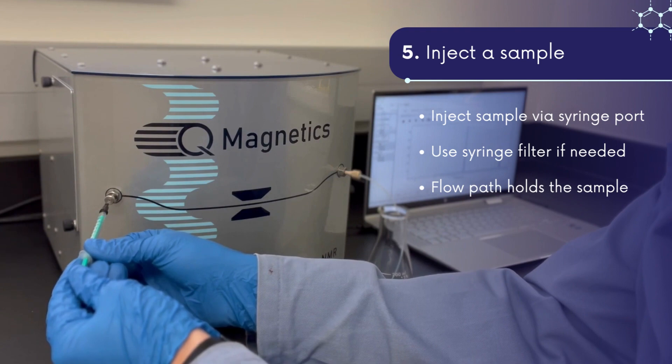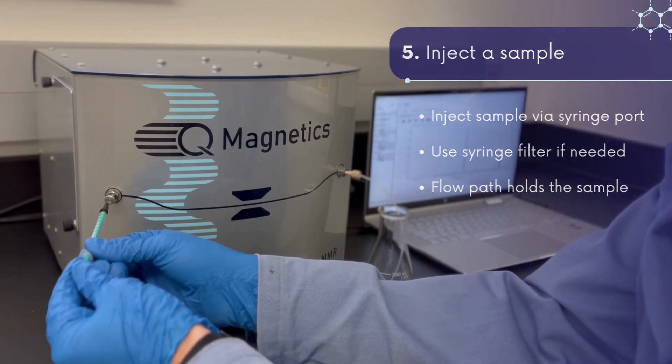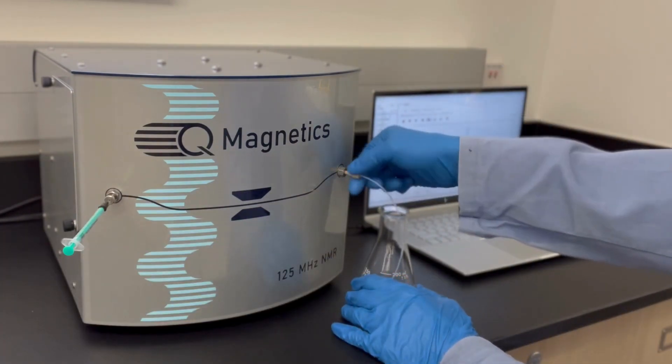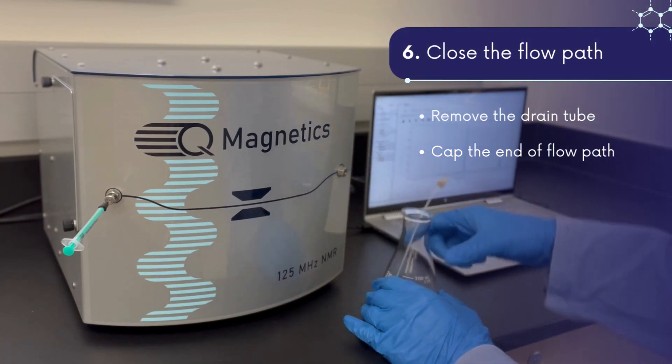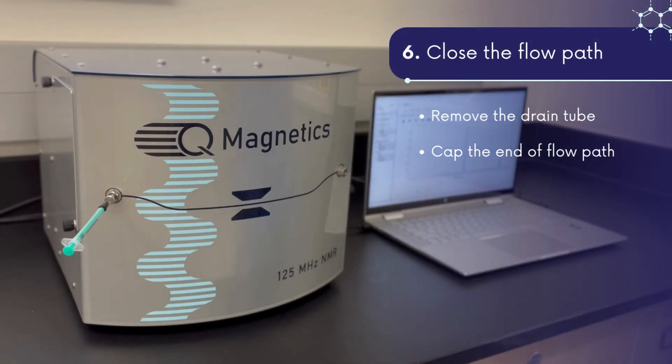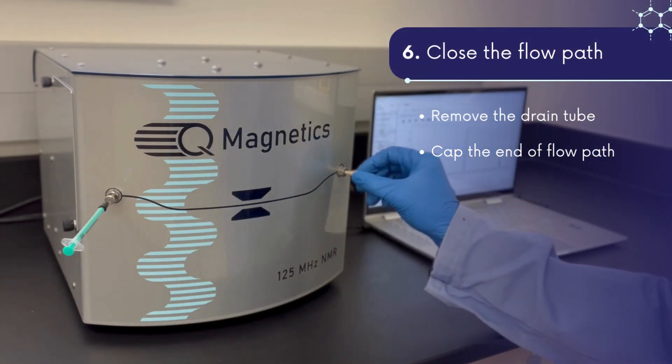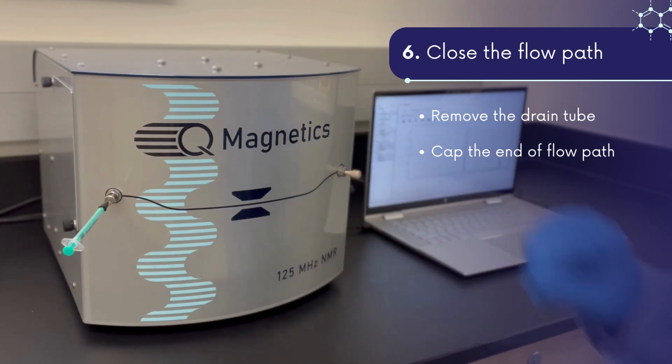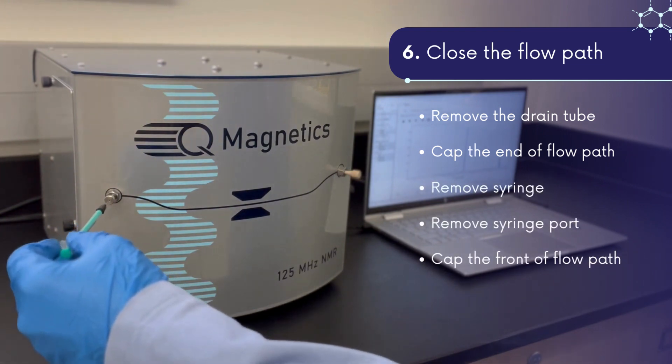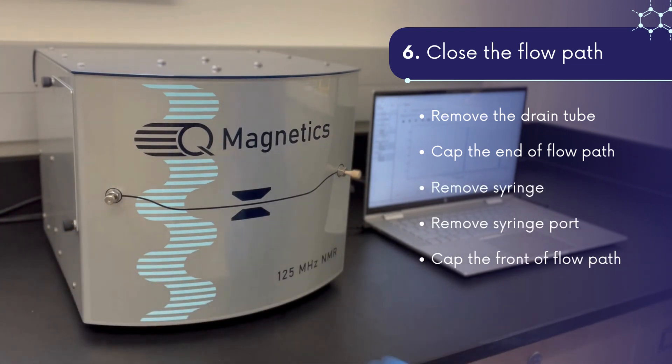After injecting, the sample is now loaded in the flow path. Now, before removing the syringe, first remove the drain tube and close the end of the flow path with a port cap. The syringe may now be removed, followed by the injection port. Lastly, close the front of the flow path to contain the sample for measurement.